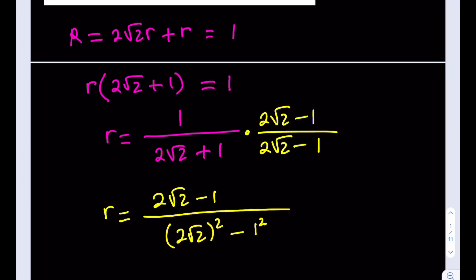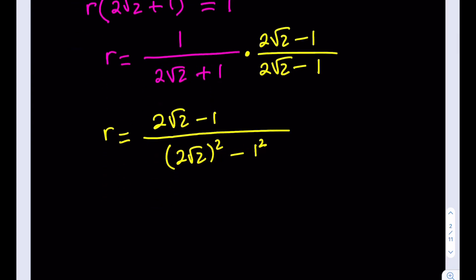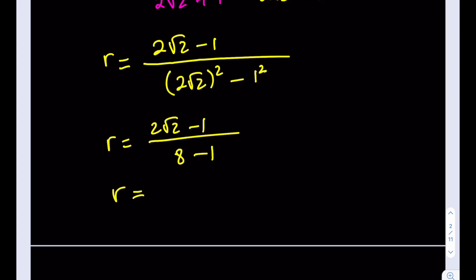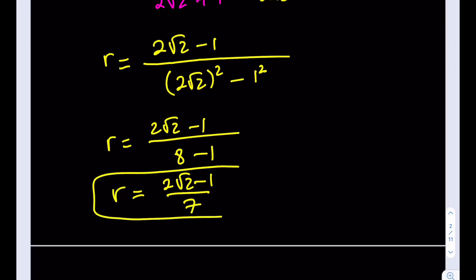Now, (2√2)² is 4 times 2, which is 8. So R equals (2√2 − 1) over (8 − 1), which equals 7. So in simplest form, our radius is R = (2√2 − 1) / 7. That's it — we found the radius.